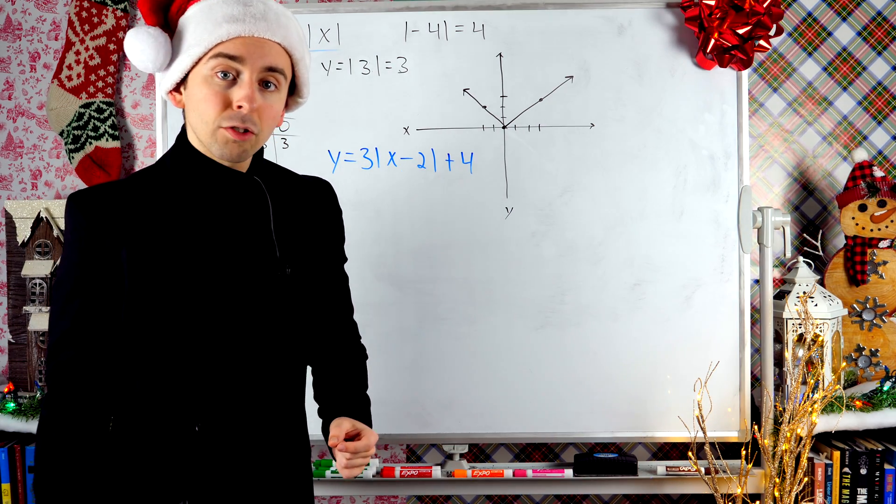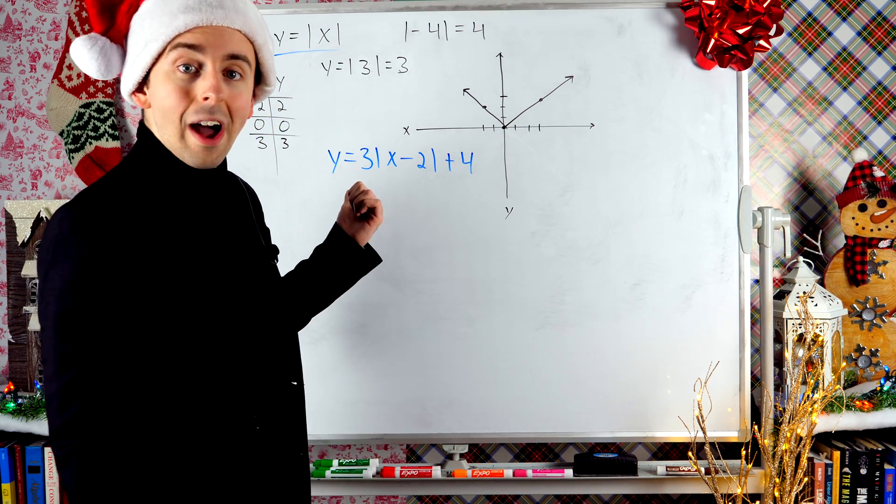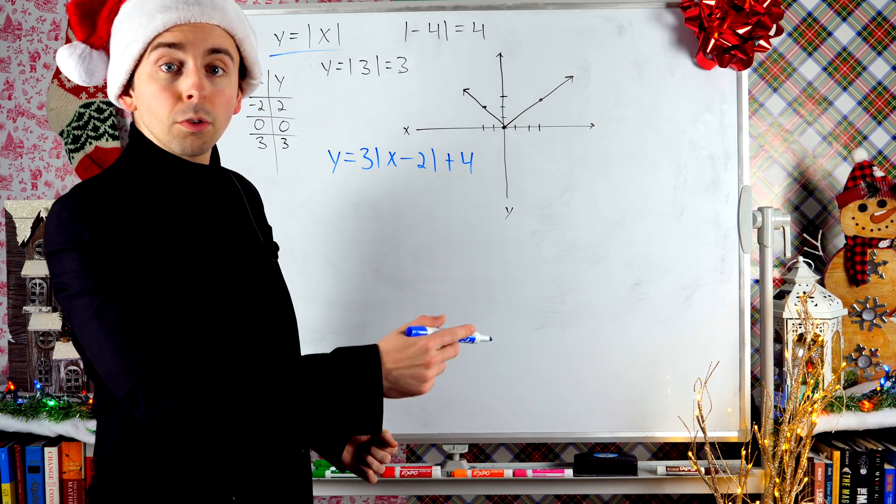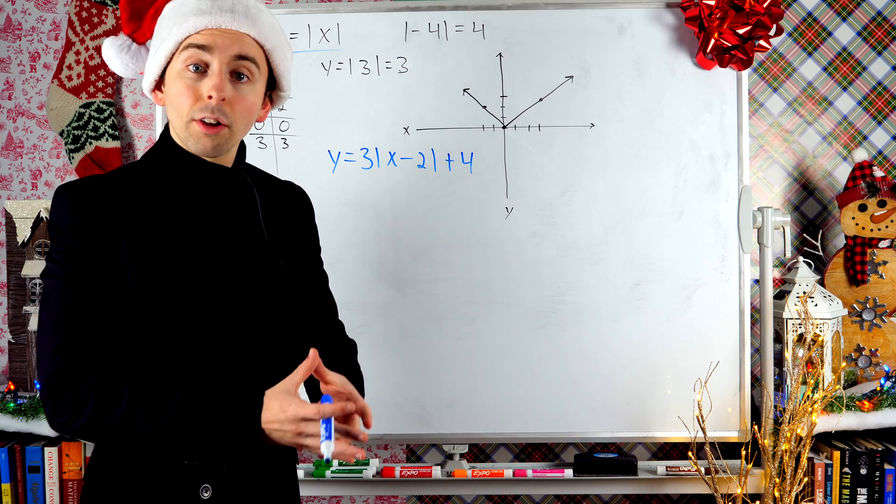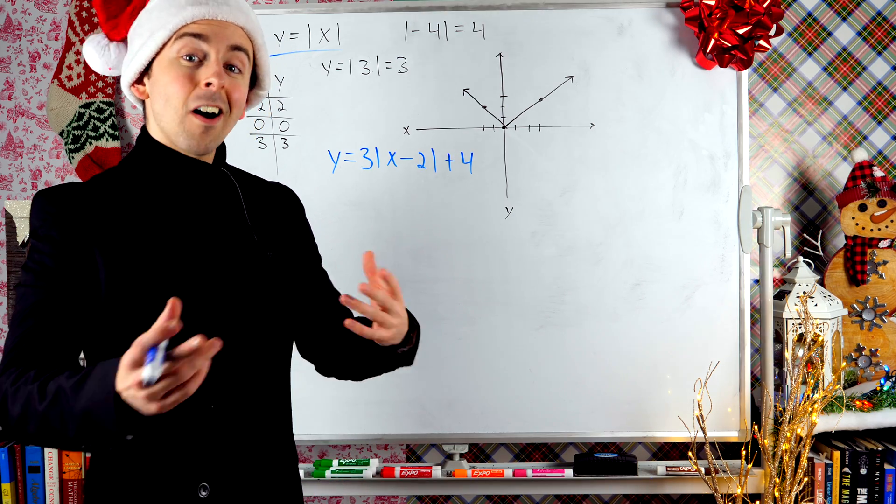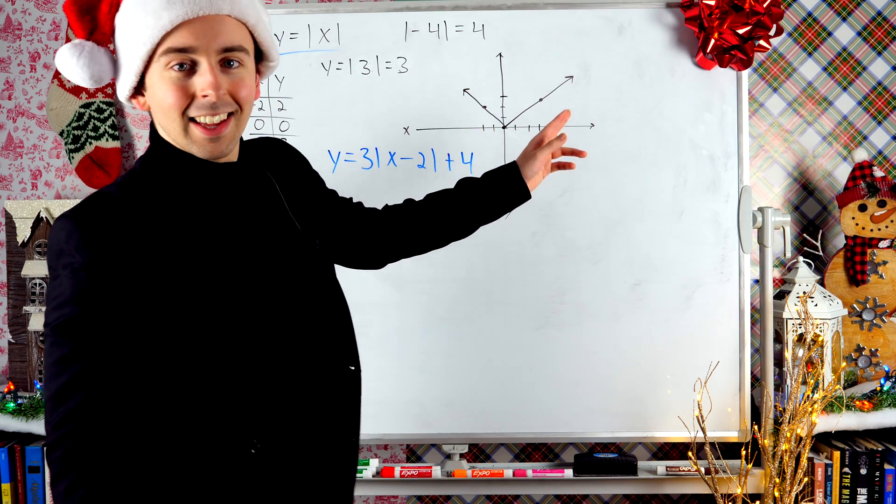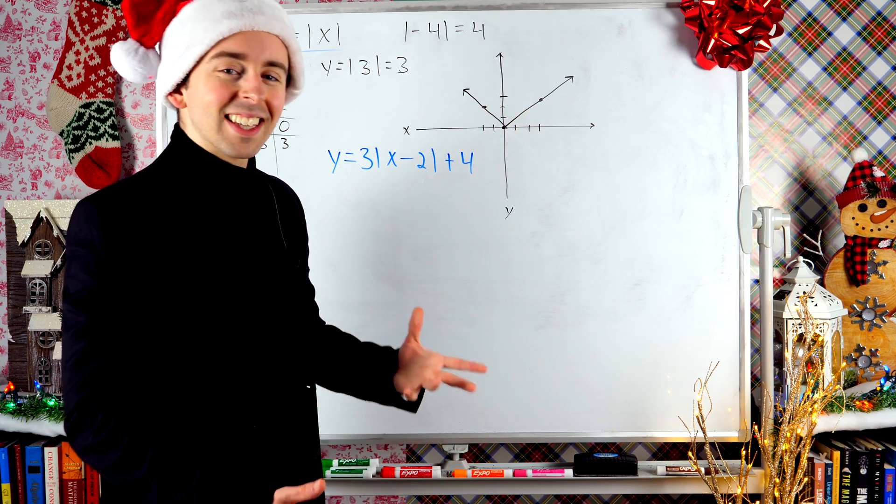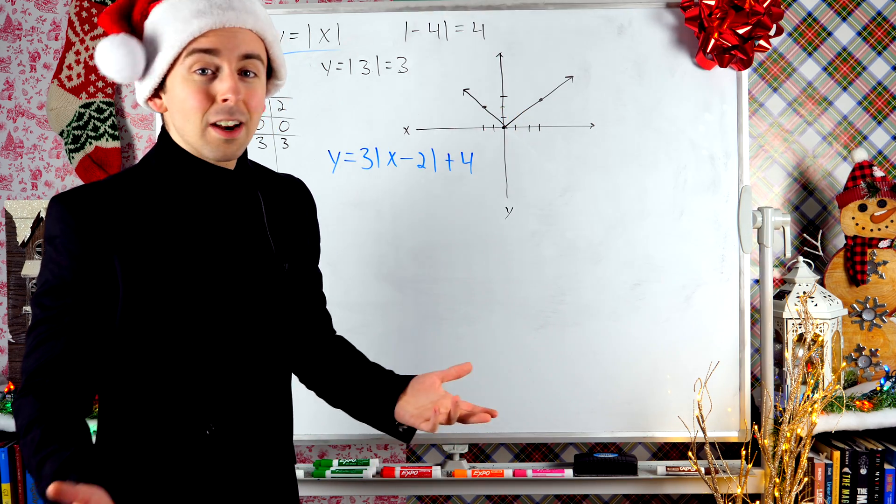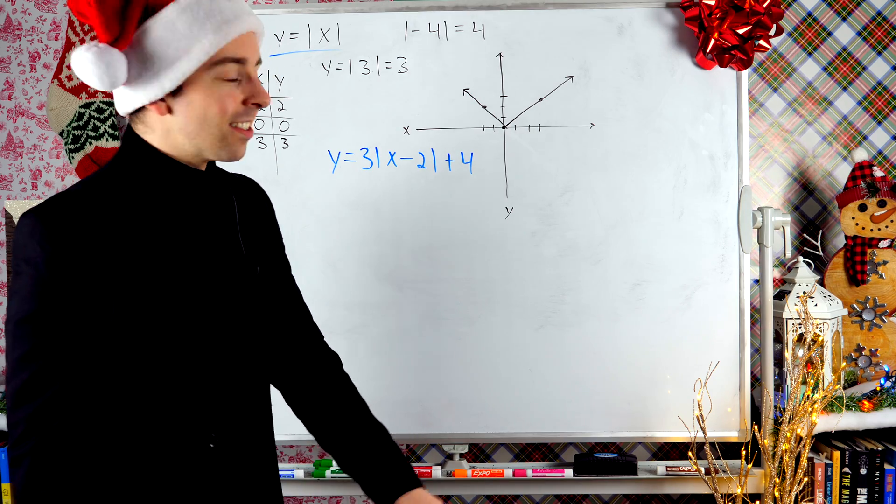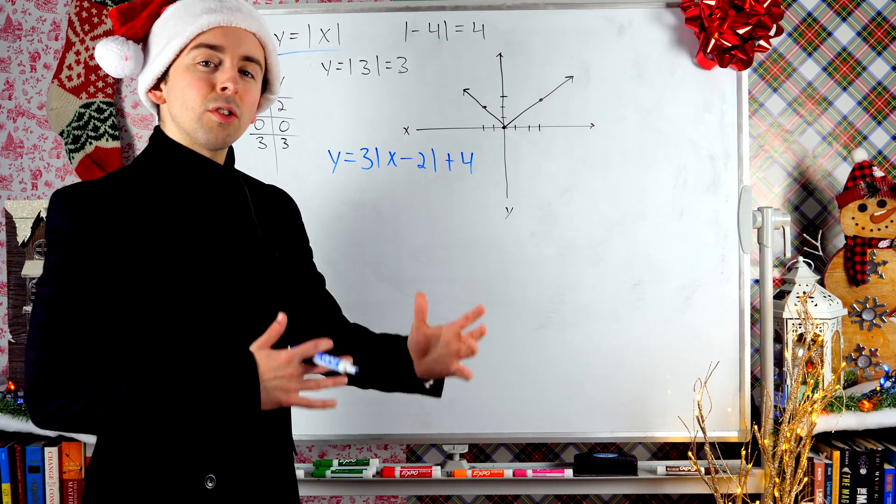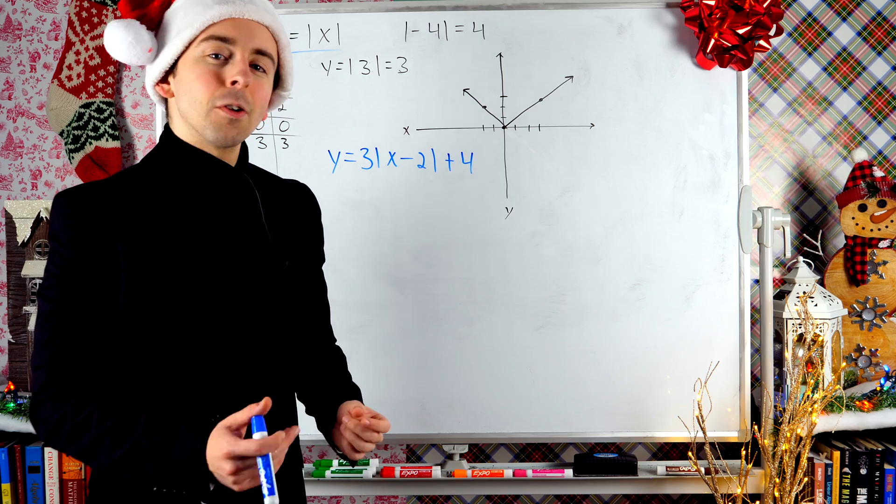Plug in some x coordinates, figure out what y has to be, plot those points, and connect them to try to get an idea of what the graph looks like. They'll all look kind of like this. They'll all look something like a v. You just can't avoid that shape when you're dealing with an absolute value function like this. But these changes will make them look a little bit different.